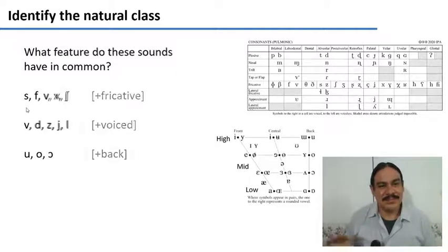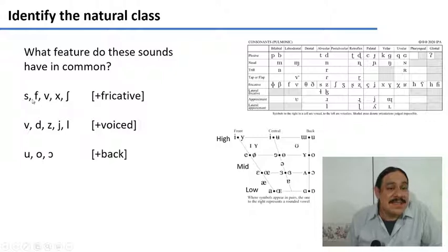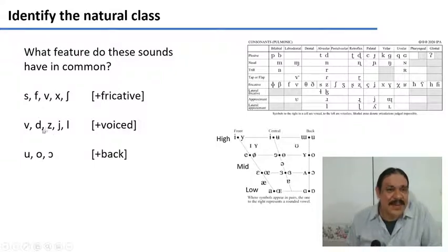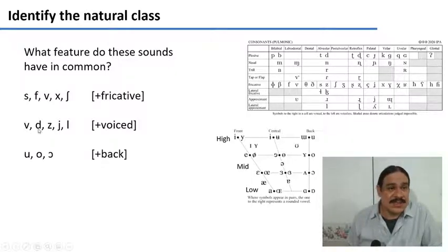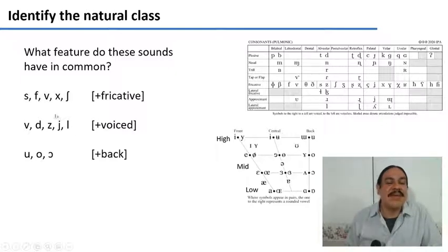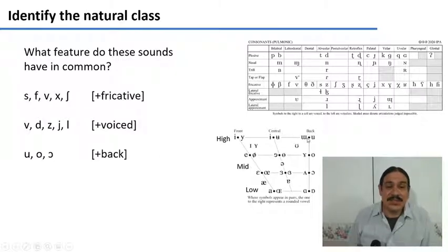All right, let's see. All of the sounds in the first group have one thing in common: they are all fricative. They have different places of articulation and some are voiced while others are voiceless, but they are all [+fricative]. The second group of five sounds are all [+voiced]. They have different places of articulation and different manners of articulation — fricative, stop, approximant, lateral — however, they all share the feature [+voiced]. Finally, the three vowels in the last group very visibly share the feature [+back].